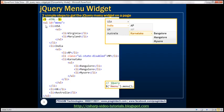To get that, we have an unordered list with ID equals 'menu'. This unordered list has four list items at the top: USA, India, UK, and Australia. If you look at the USA list item, it has another unordered list as a child, and that unordered list has two list items: Virginia and Maryland. Those are the children of the USA list item.